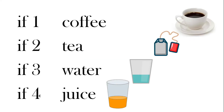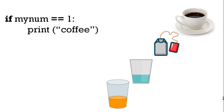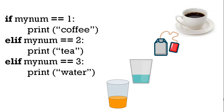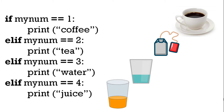For a choice of one, two, three, four — coffee, tea, water, juice — in code we have the if statement. So we could have: if my number equals equals one print coffee, elif equals two print tea, elif equals three print water, elif equals four print juice. We have if, elif, elif, elif — only one if at the start, and any others change to elif. If you want to use an else, that goes at the end.